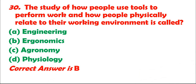Question 30: The study of how people use tools to perform work and how people physically relate to their working environment is called: A. Engineering. B. Ergonomics. C. Agronomy. D. Physiology. Correct answer is B.